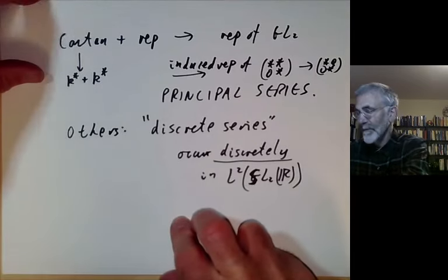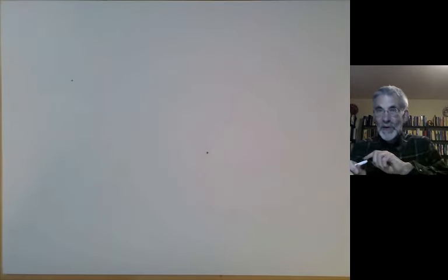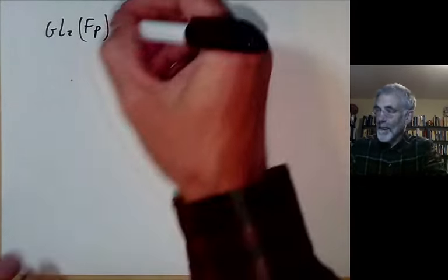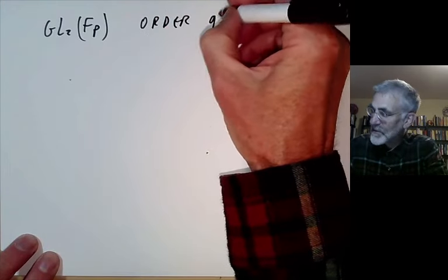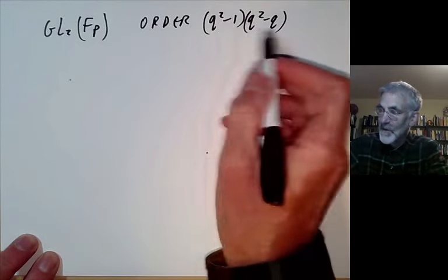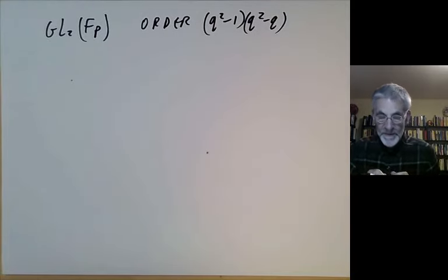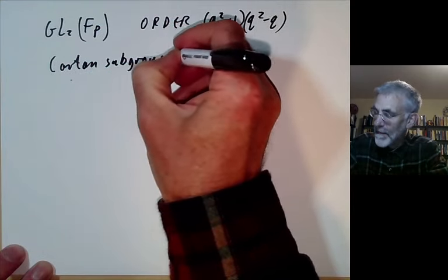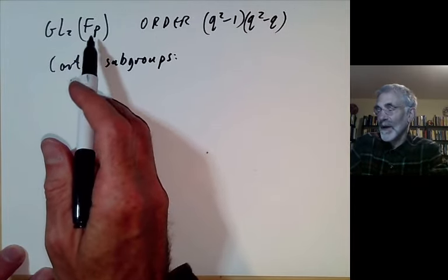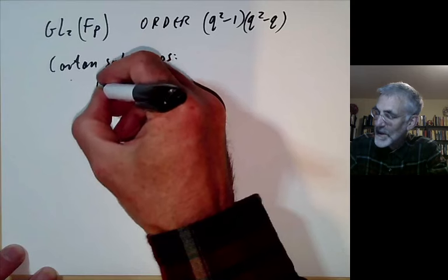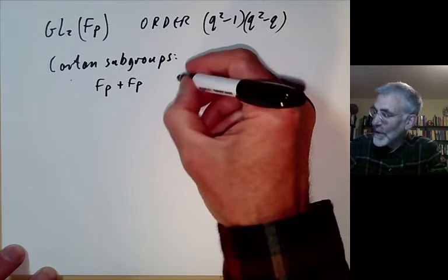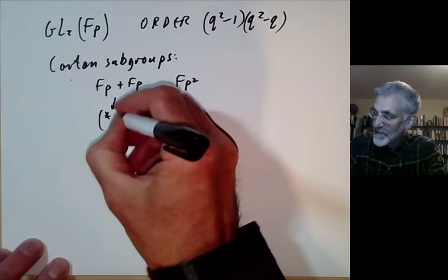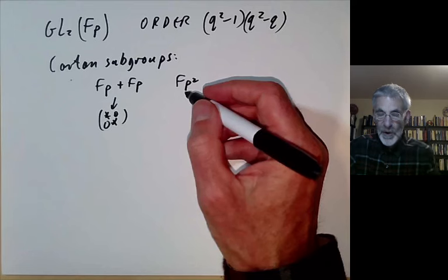Let's look at GL2 of a finite field of order p. Its order is (q²−1)(q²−q) — just count the number of ways of taking a basis of a two-dimensional vector space. To find the Cartan subgroups we need to find the two-dimensional extensions of F_p that are fields or sums of fields. There are two ways: we can take F_p + F_p, or we can take F_{p²}. There's a unique degree-two extension of F_p.